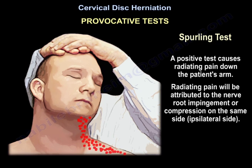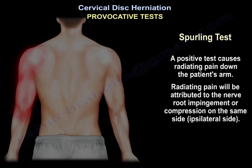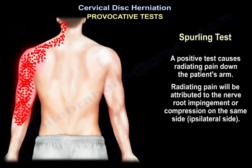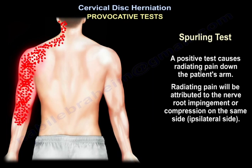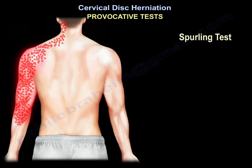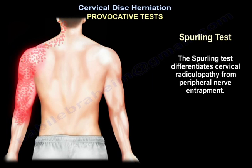A positive Spurling test causes radiating pain down the patient's arm, attributed to nerve root impingement or compression on the same — ipsilateral — side. The Spurling test differentiates cervical radiculopathy from peripheral nerve entrapment.